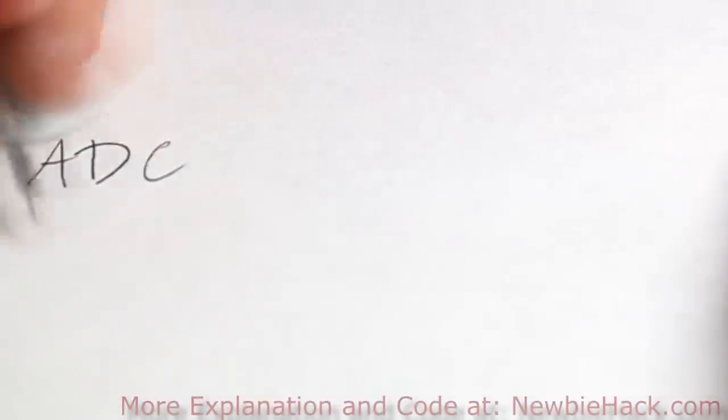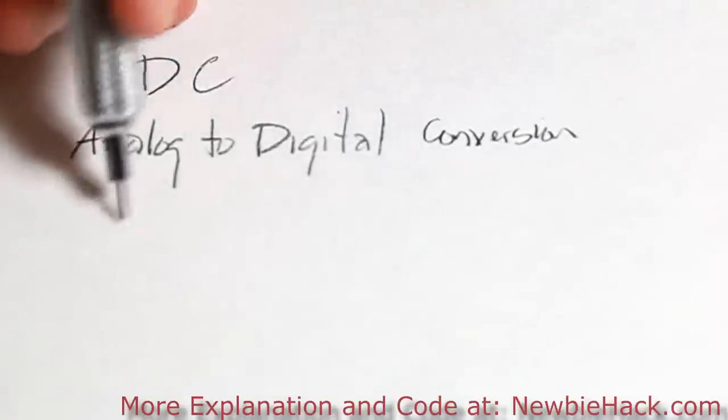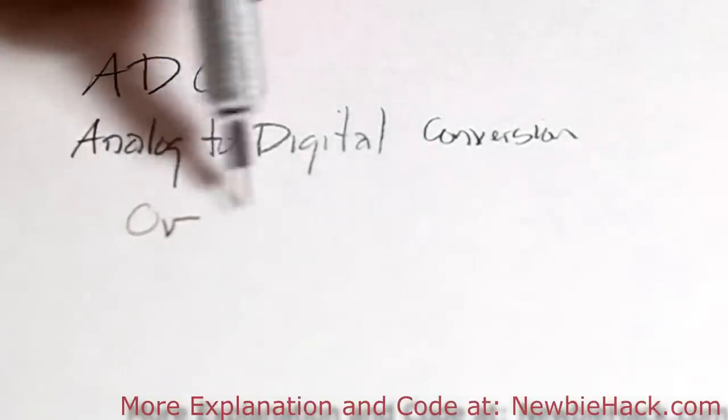In this video we're going to talk about analog to digital conversion. That is just converting a range of voltage from zero volts to a voltage reference.